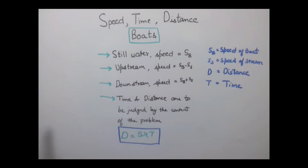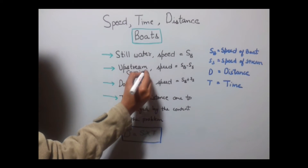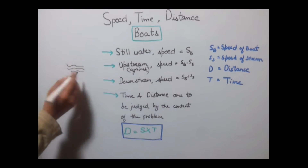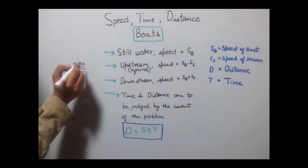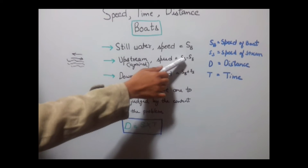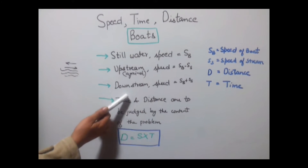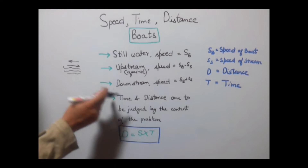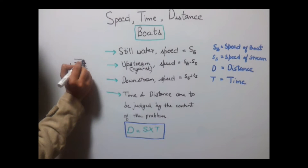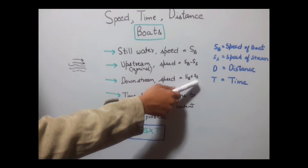Another case is upstream — that is, against the current. If the river water is flowing in one direction and the boat goes in the opposite direction, the speed in this case would be SB minus SS. Another case is downstream, when both the speed of the stream and the speed of the boat are in the same direction — in this case, speed will add up as SB plus SS.